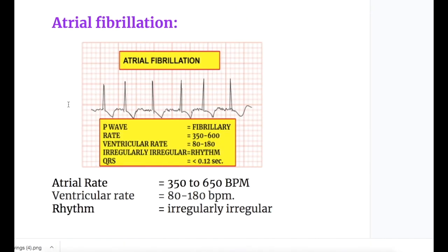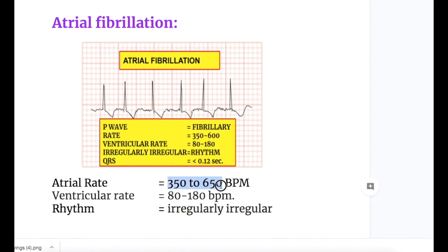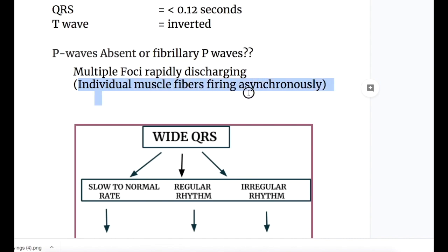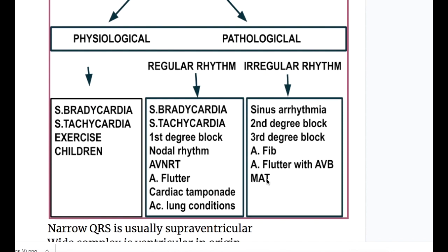Next is atrial fibrillation. In atrial fibrillation the atrial rate is 350 to 650 beats per minute. P waves are fibrillatory and the rhythm is irregularly irregular. The ventricular rate is 80 to 180 beats per minute. QRS is less than 0.12 seconds with T-wave inversion, while fibrillatory P waves are present. Multiple foci rapidly discharge and individual muscle fibers fire asynchronously, leading to atrial fibrillation. Multifocal atrial tachycardia also causes irregular narrow QRS.